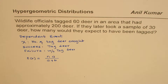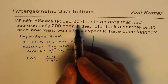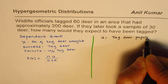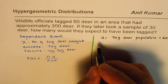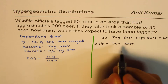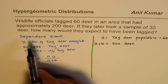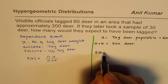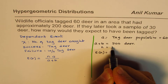Let's read the question and place the values to solve this. Wildlife officials tagged 60 deer in an area, so A — the tagged deer population — is 60. The total population, A plus B, is 200 deer, making the untagged deer B equal to 140. They took a sample of 30 deer, so n is 30, and we want to calculate the expected value E of X.